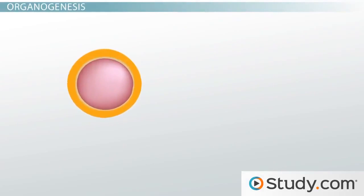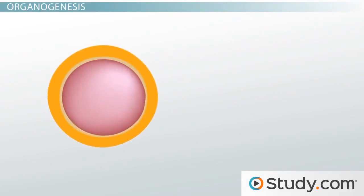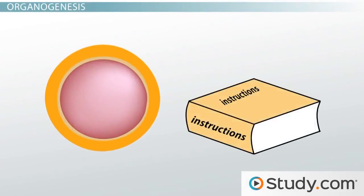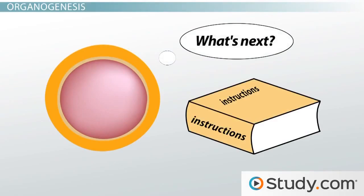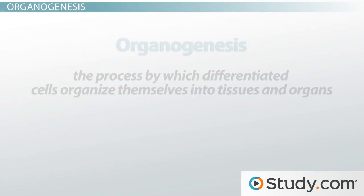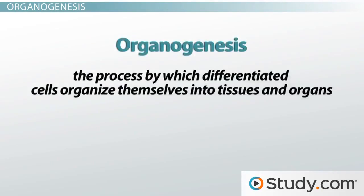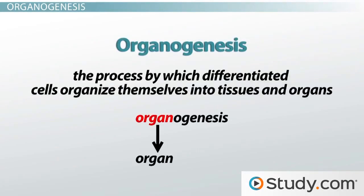Okay, so once each cell has gotten its instructions, then what? Well, following the process of cell differentiation comes another process called organogenesis. Organogenesis is the process by which differentiated cells organize themselves into tissues and organs.